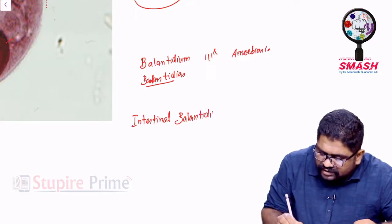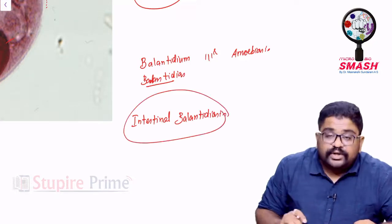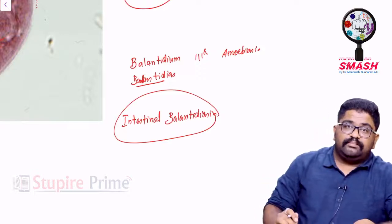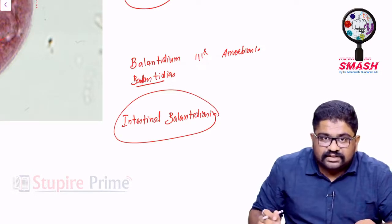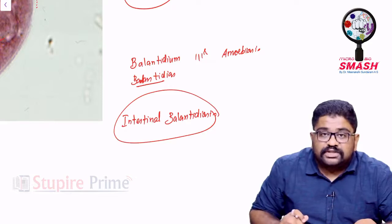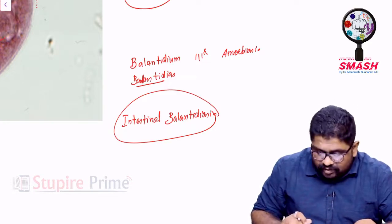It is capable of causing dysentery and diarrhea, though the intensity of dysentery is not very massive and is not very high as in case of Amoebiasis. Still, it is capable of causing dysentery by causing minimal amount of inflammation in the local area.